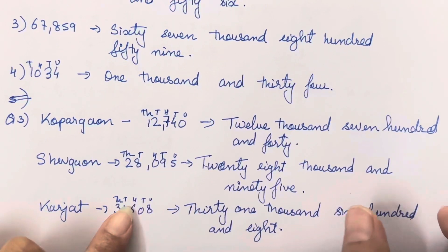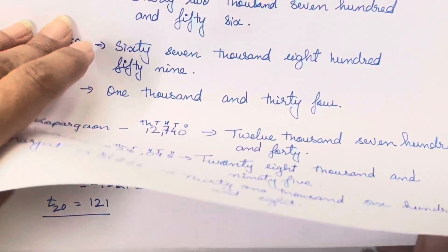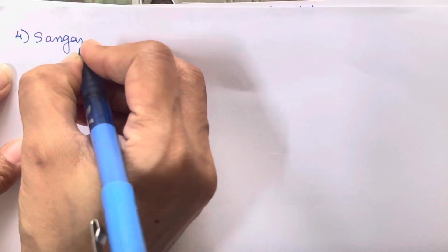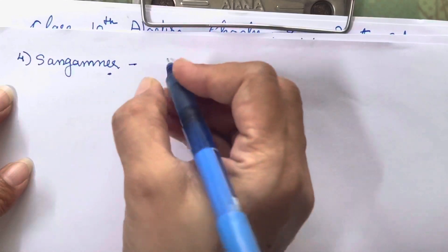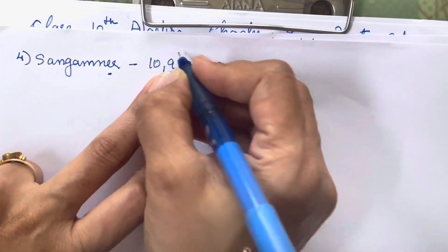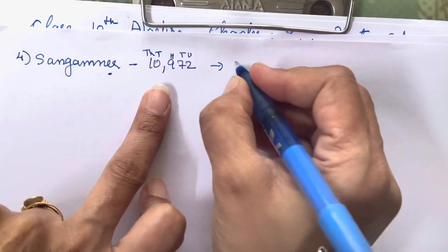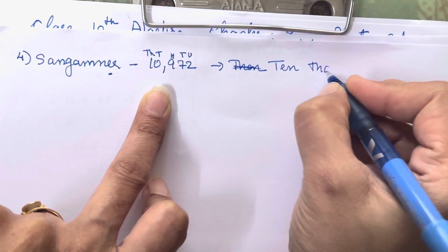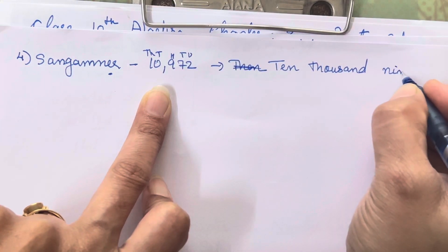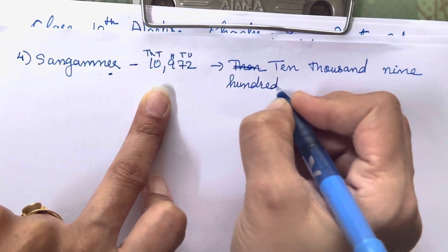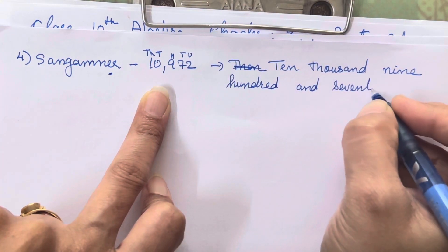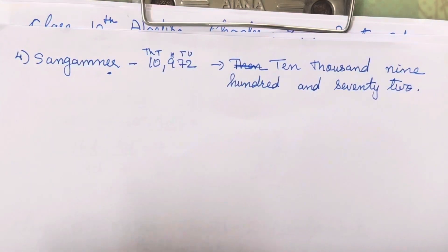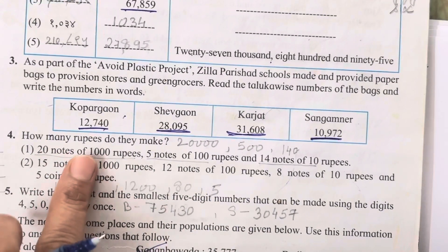Those who have not understood how to do this, you can go and watch my separate video in which I have explained how to write numbers in words and how to read them properly. Now for Sangamnir, the number is 109722 - unit, tens, hundred, thousand, ten thousand - so that is one lakh nine thousand seven hundred and seventy-two.